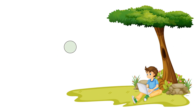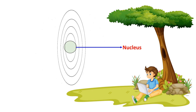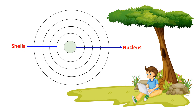When we look at atom structure, the atom has a nucleus at its center. The nucleus contains protons and neutrons. Around the nucleus are circular orbits called shells and energy levels. The electrons are found in these shells and energy levels.